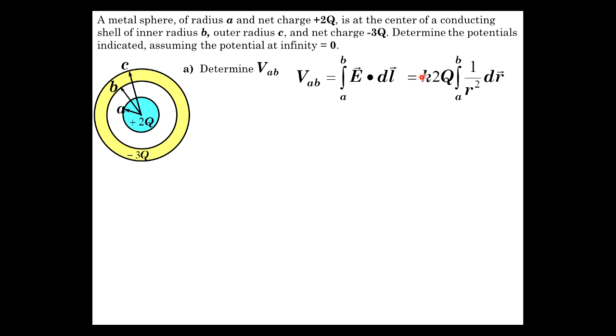The integral of 1 over r squared is minus k2Q over r from a to b, which equals minus 2kQ times 1 over b minus 1 over a. Flip the order around because of the minus sign.